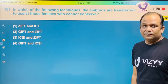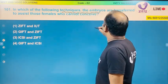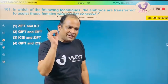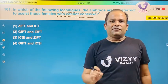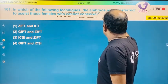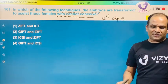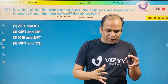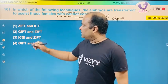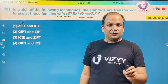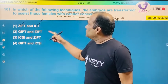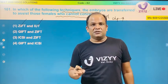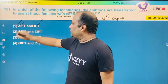Hello students, this is question number 101. The question asks: in which technique are embryos transferred to assist females who cannot conceive? The answer involves GIFT (Gamete Intra-Fallopian Transfer) and IUT (Intra-Uterine Transfer). In GIFT and IUT, embryos are transferred up to the eight blastomere cell stage, as clearly written in the textbook.